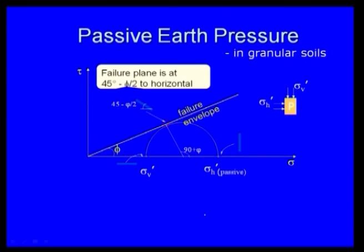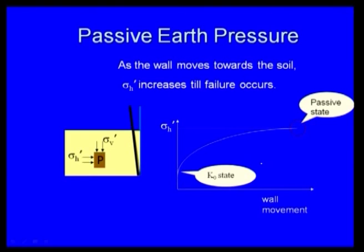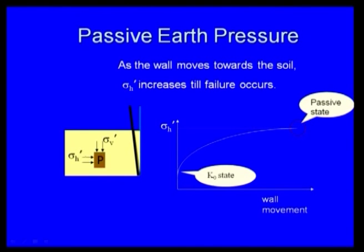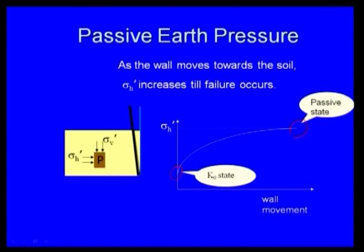For passive earth pressure in granular soil, the failure plane is at 45° − φ/2 to the horizontal. As the wall moves toward the soil, sigma-H increases from the K0 condition, increasing until it reaches the passive state. This is the variation from active to passive state in both graphical representation and wall movement terms.